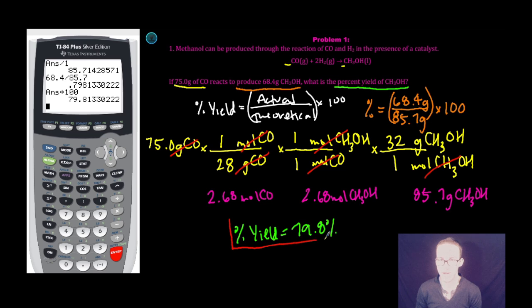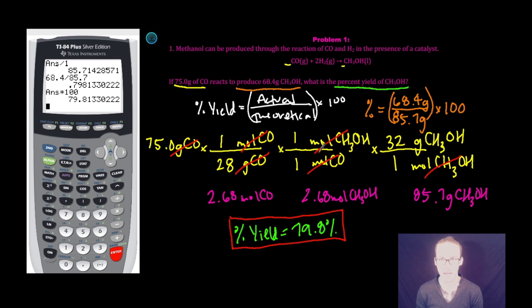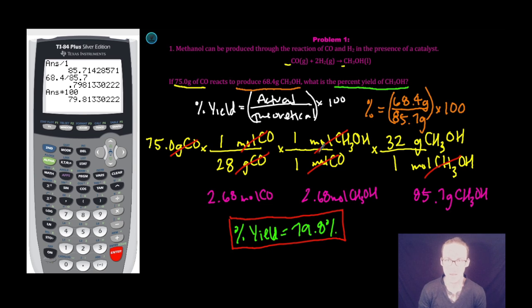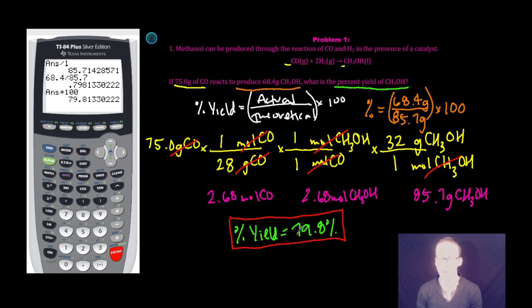Box your final answer. It's really important that you are comfortable with dimensional analysis. On the free response section, failure to show dimensional analysis will mean you get zero points, even if you end up with the correct answer. So show your work through dimensional analysis, make sure you include units at each step, and then clearly mark your final answer.